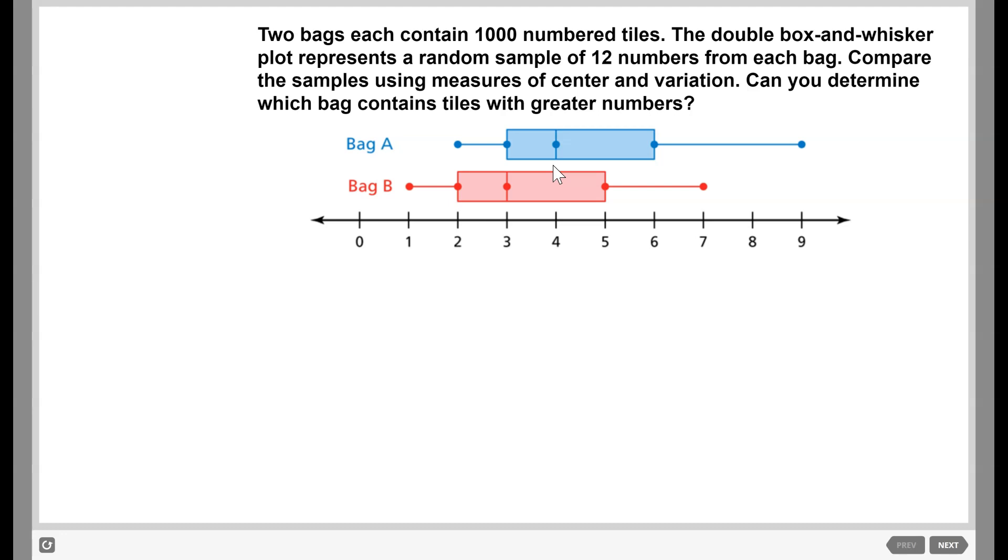We can see for bag A, the median is 4, and the IQR 6 minus 3 is 3. And then for bag B, the median is 3, and the interquartile range 5 minus 2 is also 3.